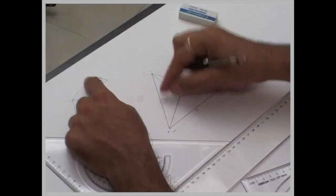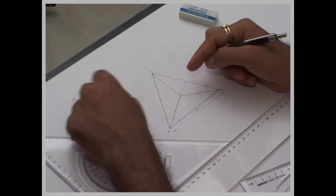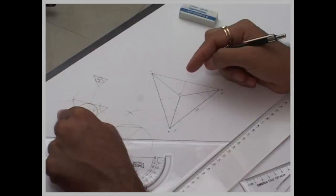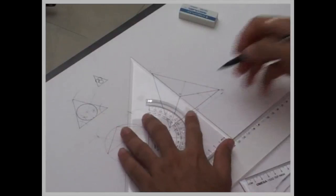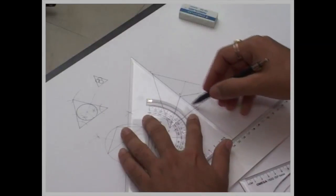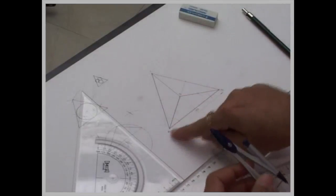Now, if I want to draw an incircle, remember this method. If you want to draw an incircle inside a triangle, you have to bisect any two angles. In this case, what we can do, we can draw vertical line and we can bisect angle OAB.